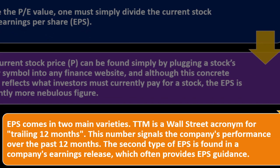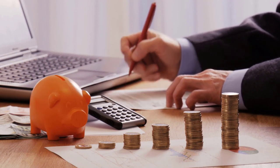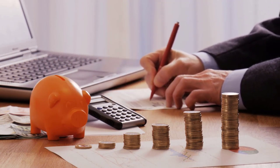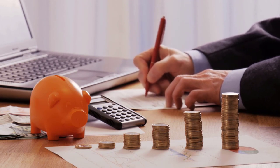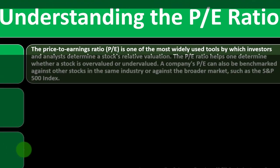Earnings per share comes in two main varieties. TTM is a Wall Street acronym for trailing 12 months — this number signals the company's performance over the past 12 months. The second type of EPS is found in a company's earnings release, which often provides EPS guidance — the company's best-educated guess of what it expects to earn in the future. Past EPS data is more reliable since it's based on actual data, but we're often trying to look toward the future. These two versions form the basis of trailing and forward P/E respectively.